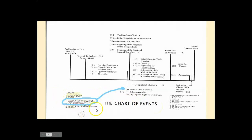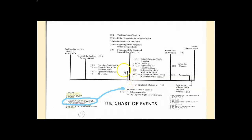Let's review this chart of events. The references used to support Jacob's time of trouble are located right here, and we notice that Jacob's time of trouble is placed before Ezekiel 9. This is very clear — we cannot get around it. This chart wants us to think that Jacob's time of trouble appears right before Ezekiel 9. Our great question is: is that truth? Is that based on the sure word of prophecy?